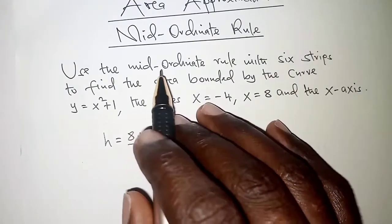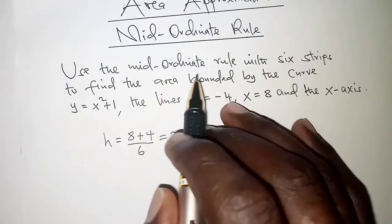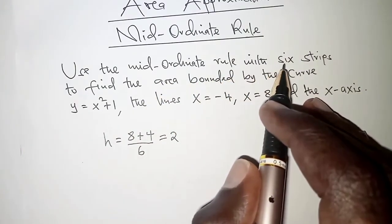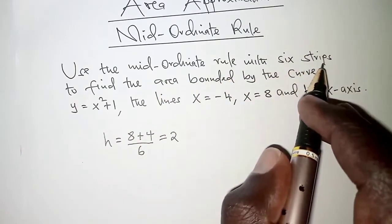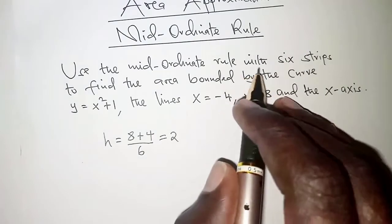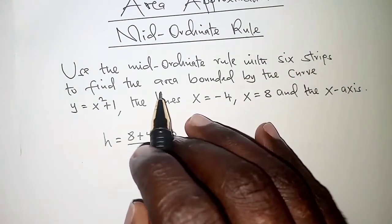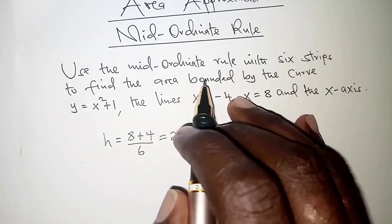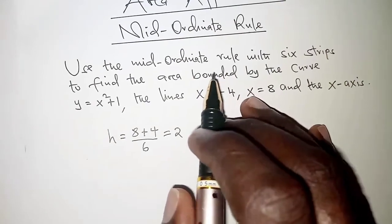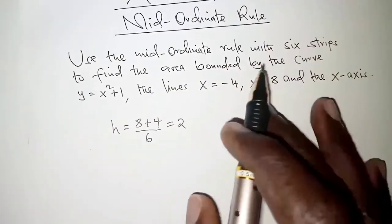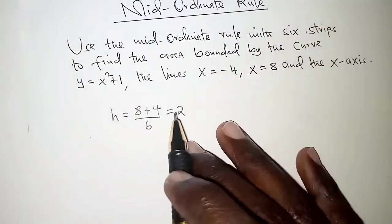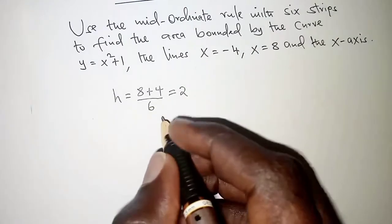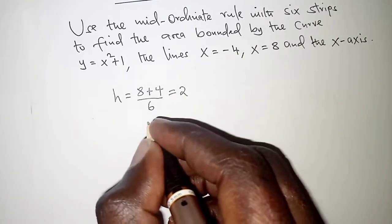Note: if you are told to use the mid-ordinate rule with 6 ordinates, then the number of ordinates will be the same as the number of strips in this case. From here we can therefore come and do a rough sketch.